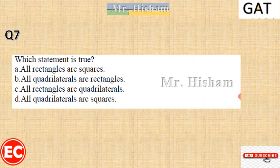Question: which statement is true? All rectangles are squares? No. All quadrilaterals are rectangles? No. All rectangles are quadrilaterals? Yes — because a rectangle is a four-sided shape, so all rectangles are quadrilaterals.